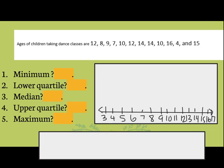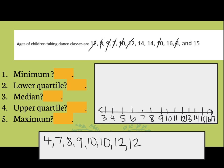Now let's look at creating a box plot. I started the number line part already. The first thing you need to do is put your numbers in order, because we need to find the median. So here we go: four, seven, eight, nine, ten, ten, ten, twelve, twelve, fourteen, fourteen, fifteen, sixteen. I always cross them off when I've used them to make sure I have all my numbers.